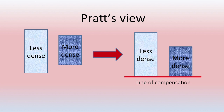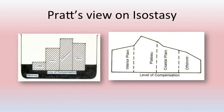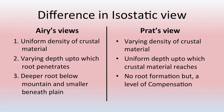Pratt used mercury for his experiment. When copper columns of varying density were immersed in mercury, both floated at the same level along a line of compensation. He took metal bars of varying density with the same weight, placed them in mercury, and they all formed a level of compensation at which all bars were floating. The key difference: Airy assumed uniform density with varying depth, while Pratt assumed varying density with a uniform compensation level.